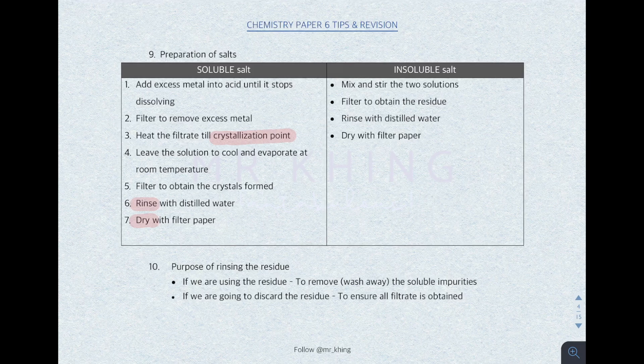For preparation of insoluble salt — this is a precipitation reaction. Mix and stir two soluble solutions to produce a precipitate. Then filter to obtain the residue. Same thing: rinse with distilled water and dry with filter paper. The purpose of rinsing the residue depends on what you are using. If you need the residue, it removes soluble impurities stuck on the surface. If you are discarding the residue and need the filtrate, rinsing ensures all filtrate is obtained.